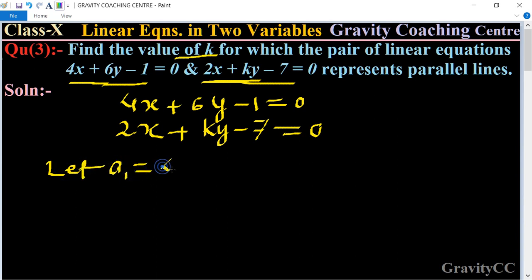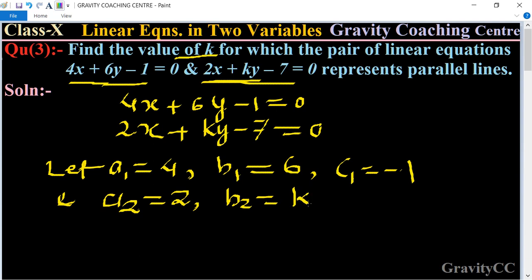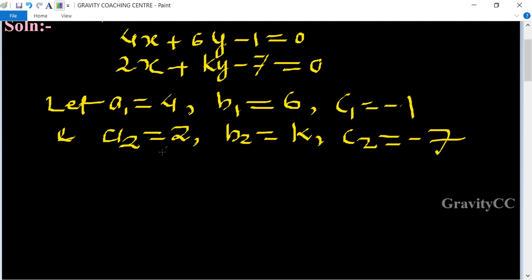Let a1=4, b1=6, c1=-1, and a2=2, b2=k, c2=-7. According to the question, these lines represent parallel lines, which means they have no solutions.